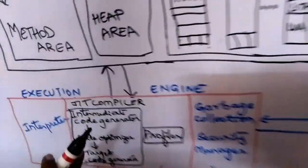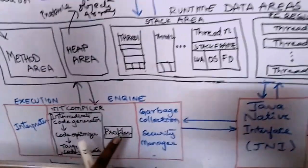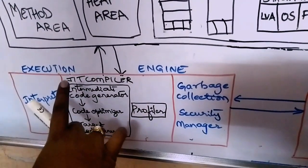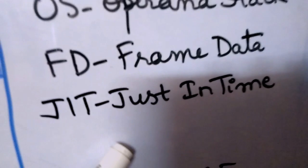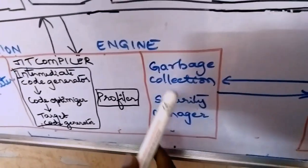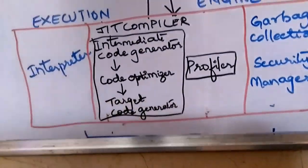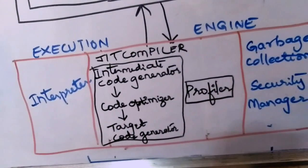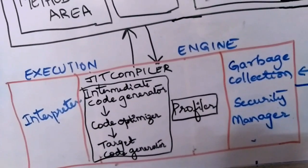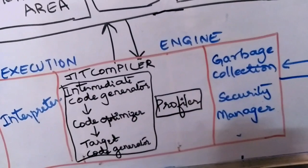Now we get into the third and very important module of JVM — the execution engine — where execution takes place. Inside the execution engine there are three parts: the interpreter, the JIT compiler (just-in-time compiler), and the garbage collector. The interpreter takes the code line by line and executes it. Since it works line by line, it takes a long time, which is why Java's performance is a bit slower compared to native languages like C and C++.